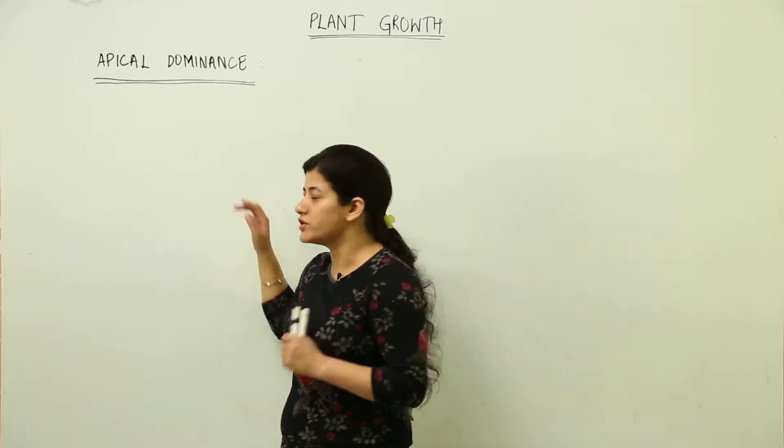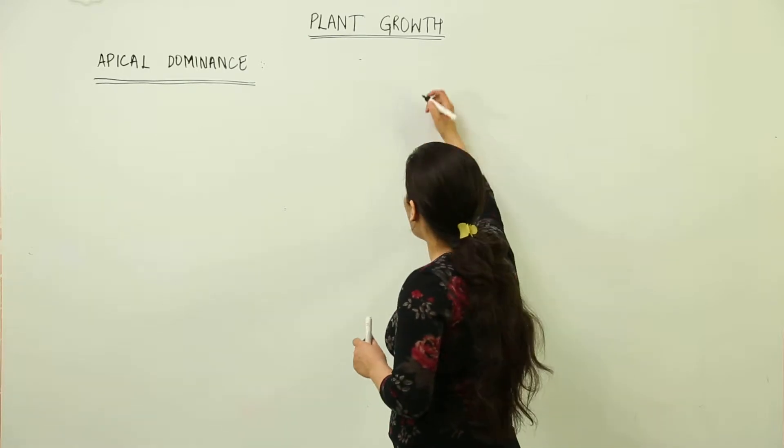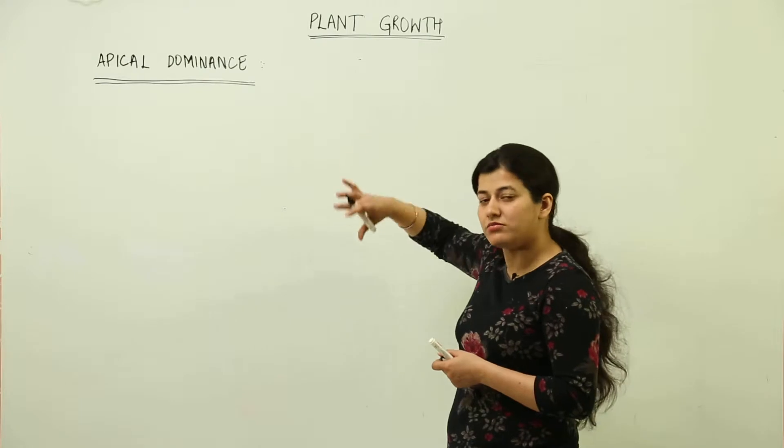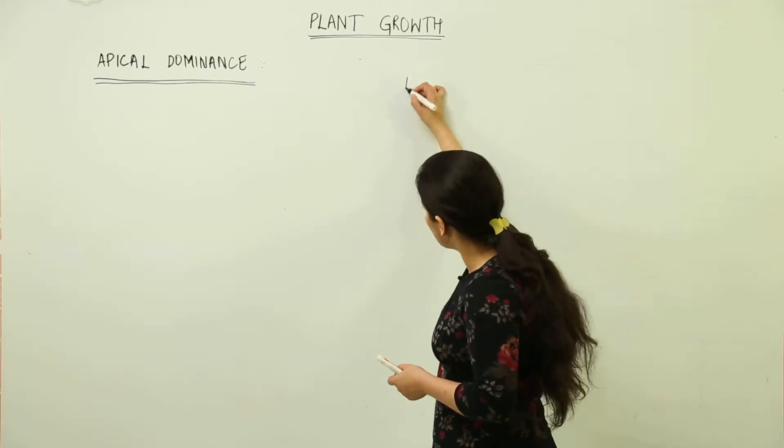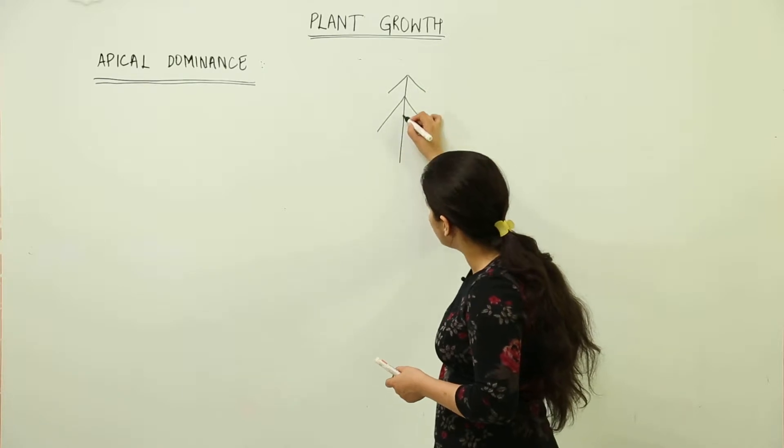Now try to understand what I am telling you. You all must have seen a Christmas tree that is decorated for Christmas or any sort of conifer. Whenever we draw a mountain scene, we usually draw the tree like this. The apex is going upwards.